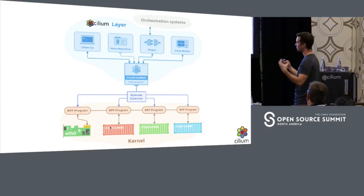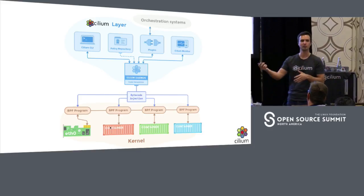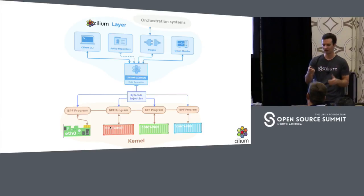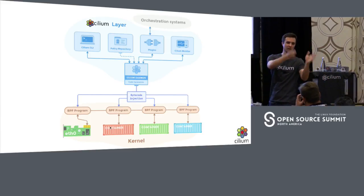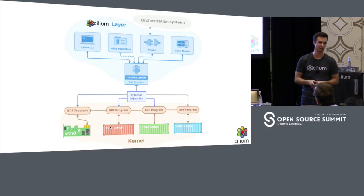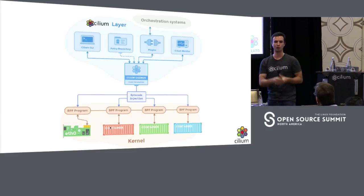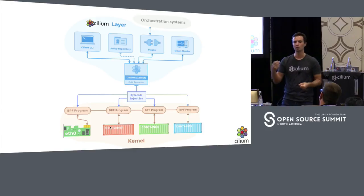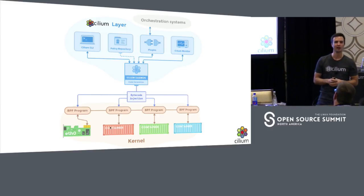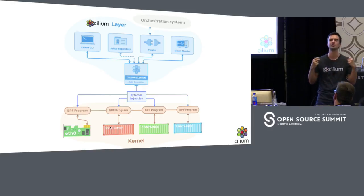This is our data path on the kernel side. On the upper side we integrate with the rest of the world: a CLI for debugging, a policy repository (your Kubernetes control plane or a key-value store), plugins for Kubernetes, Mesosphere, and Docker, and a Cilium monitor. The monitoring component listens to events on the data path — for example, whenever Cilium drops a packet or request due to policy, we generate an event through a Perf Ring Buffer. This Perf Ring Buffer comes from the tracing and profiling revolution in the kernel — we can expose millions of events per second through this.